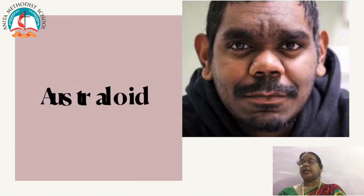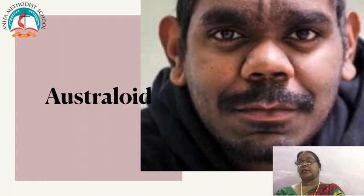Next is the Australoids. Australoids have a wide nose, curly hair, dark skin, and they are short in height. They live in Australia and Asia. Historians used to suggest that there were Australoid tribes in India, but new studies have revealed that there is no Australoid ancestry in India at all.